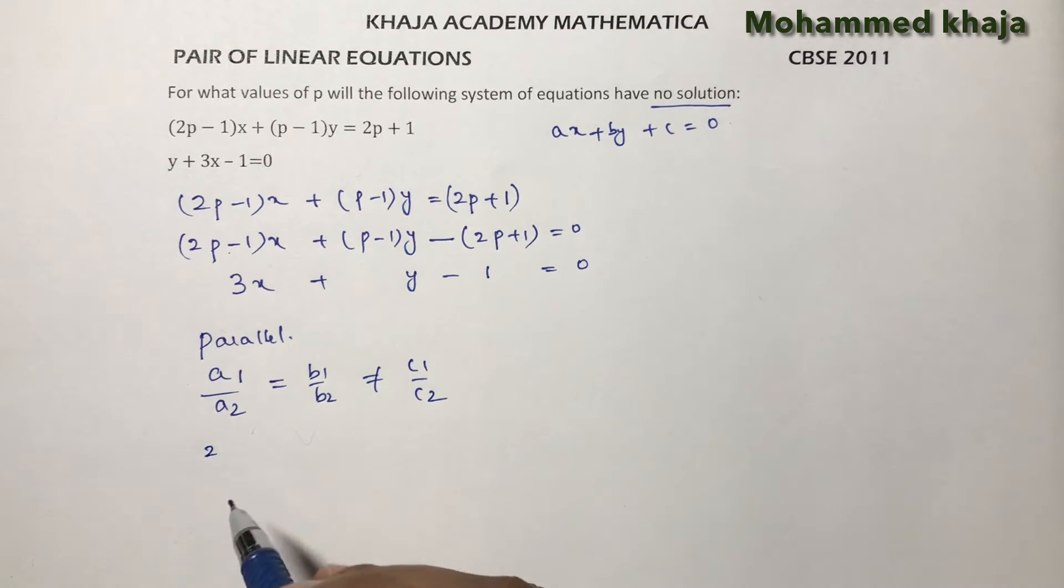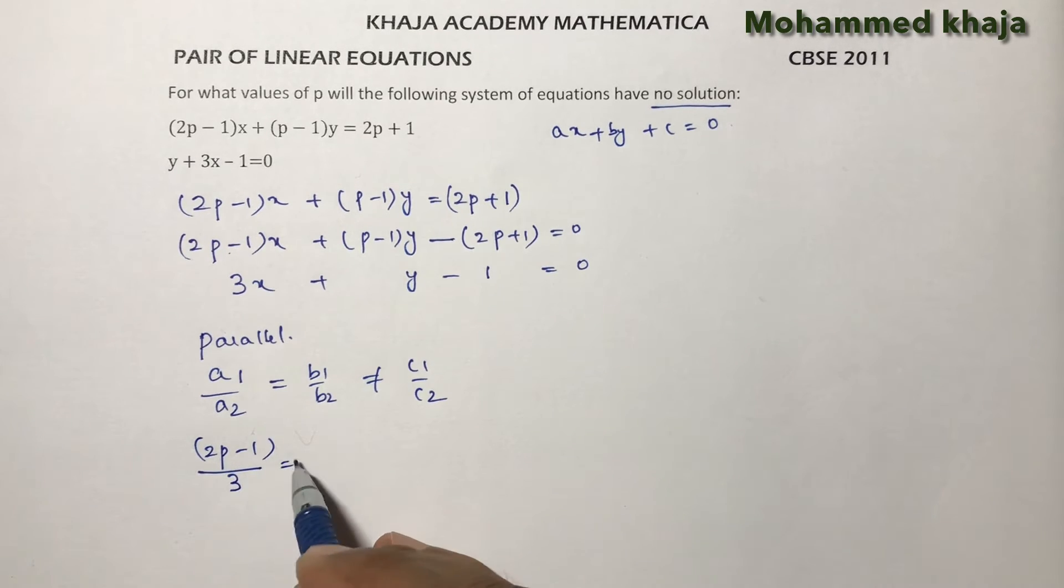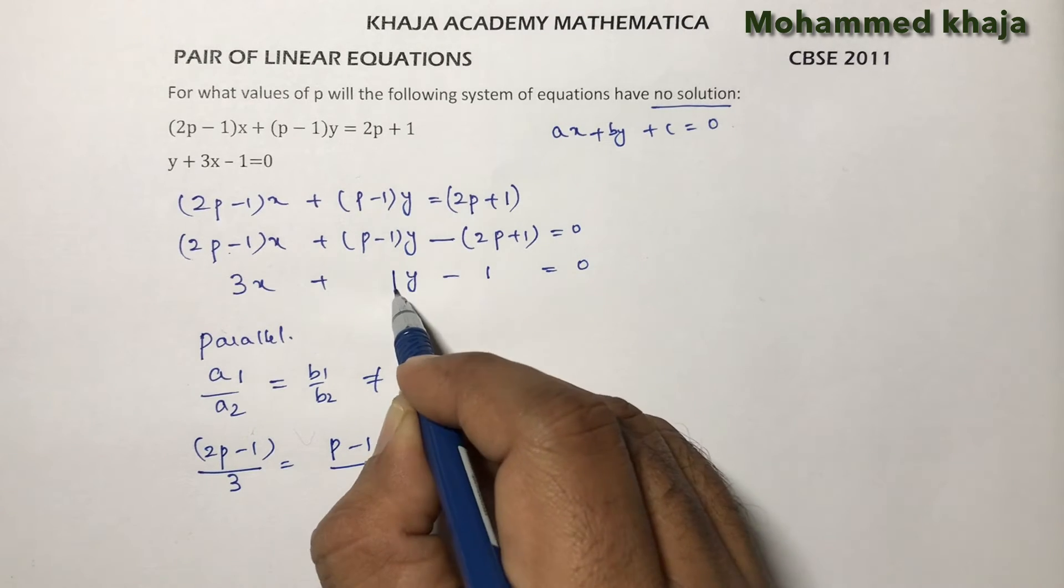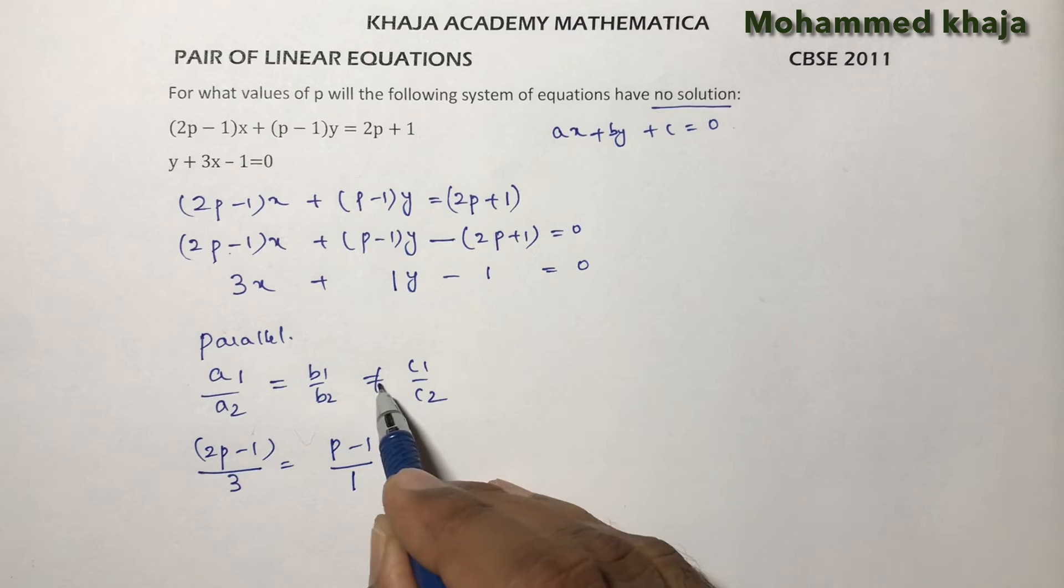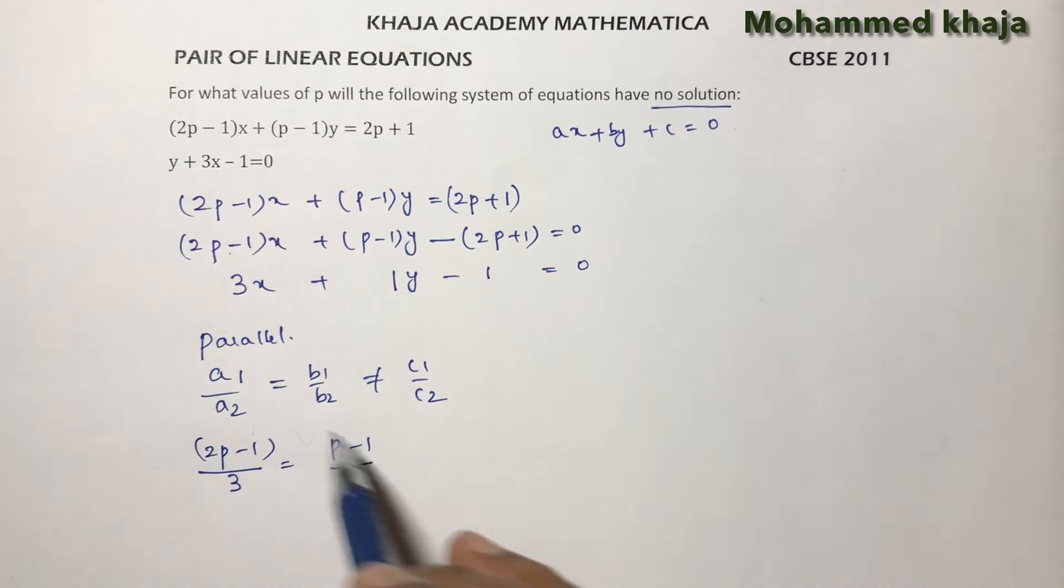Here a₁ is the coefficient of x, that is 2p - 1, and a₂ is 3. b₁ is p - 1 and the coefficient here is 1. It's not equal to c₁/c₂, so no need to check that. If we solve this, we'll get the value of p.